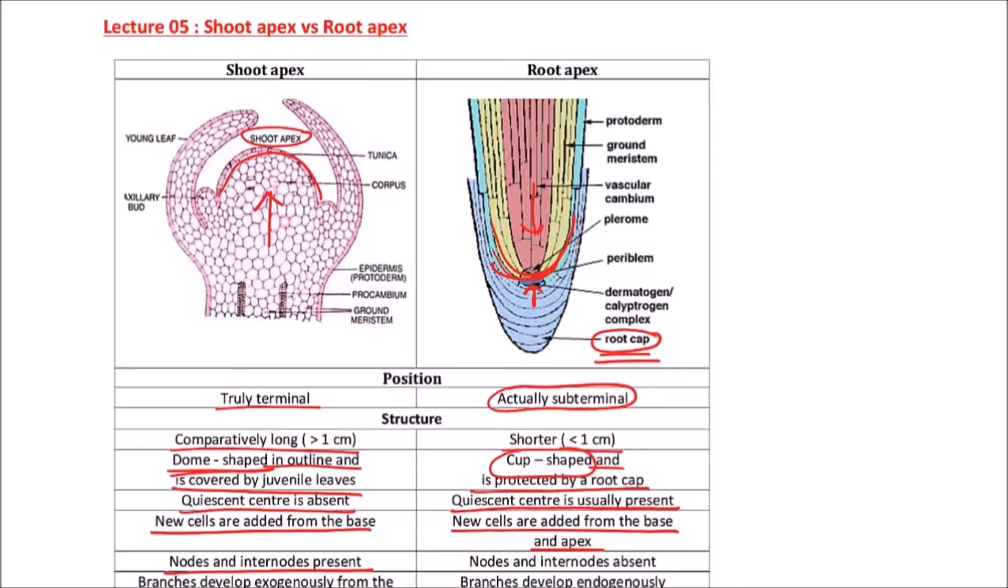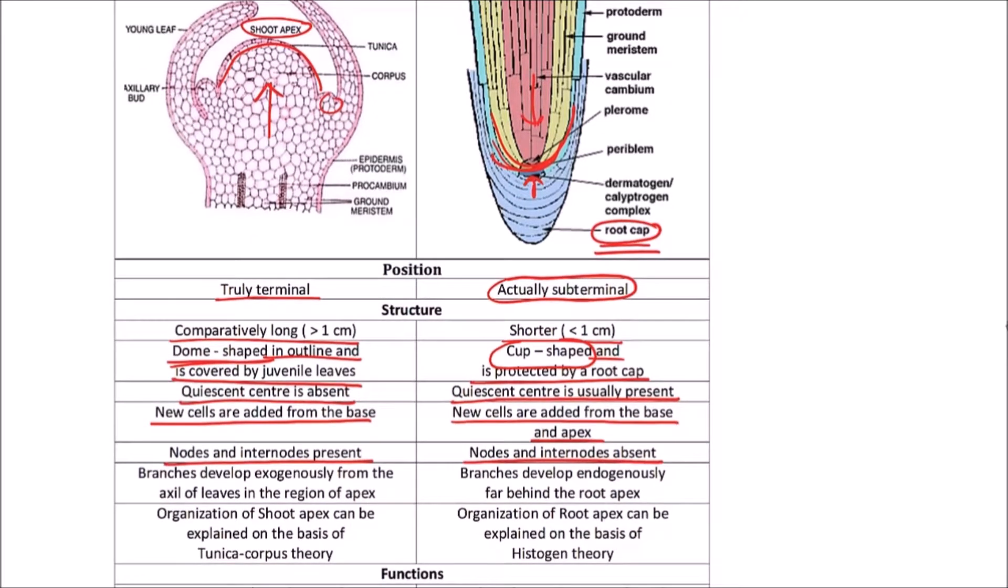In the shoot apex, branches develop exogenously from the axil of leaves in the region of the apex. In the root apex, branches develop endogenously, far behind the root apex. Next is organization: the shoot apex can be explained on the basis of tunica-corpus theory.